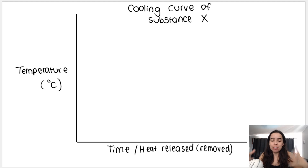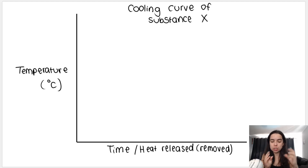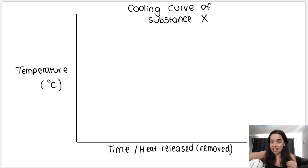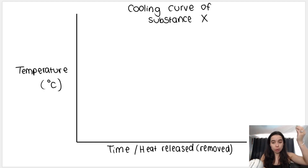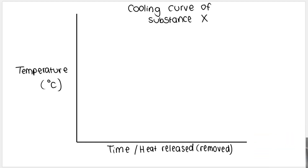The cooling curve is essentially the opposite of the heating curve. Think of the heating curve as: start with the solid, add heat, end up with gas. The cooling curve is the reverse: start with the gas, remove heat — heat is released to the environment — and end with the solid. Here is how the cooling curve looks: we start off with gas at a certain temperature, heat is being released to the environment, and we are cooling the gas.